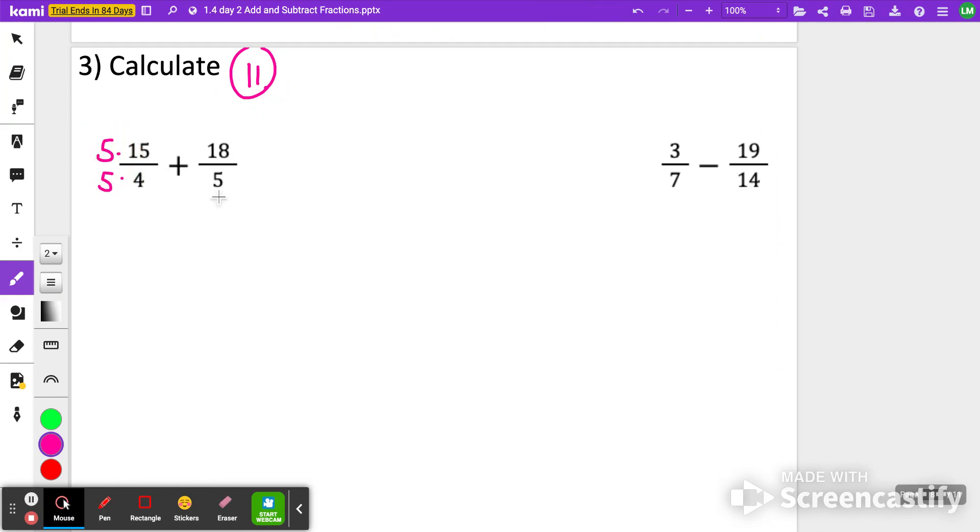So both of these 4 and 5 denominators can be changed to 20. So we're going to multiply these by 5 and this fraction over here by 4. So 5 times 15 is 75. 5 times 4 is 20. That's the desired denominator. And then over here, 18 times 4 is 72. Denominator 5 times 4, also 20. Adding together, we should get 147 over 20.